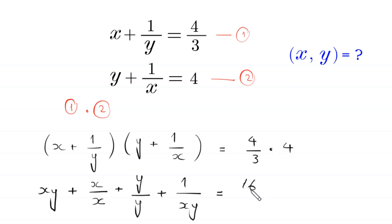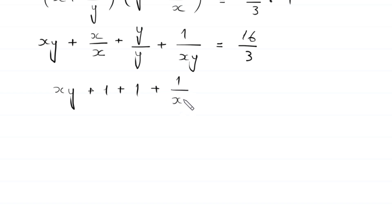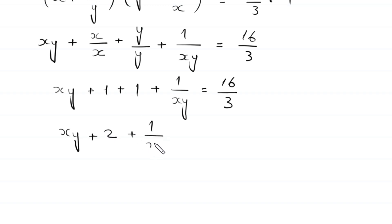Simplifying: xy plus x/x becomes 1, plus y/y becomes 1, plus 1/(xy) equals 16/3. So xy plus 2 plus 1/(xy) equals 16/3. Subtracting 2 from both sides, we get xy plus 1/(xy) on the left.